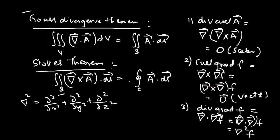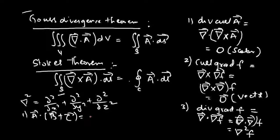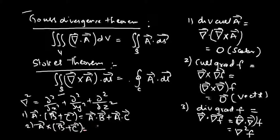These three identities are used many times in the electromagnetic wave chapter, in transmission lines, and in understanding wave propagation in waveguides and optical fibers. Additionally, the distributive property of vectors states: A-bar dot (B-bar + C-bar) = A dot B + A dot C, and A-bar cross (B-bar + C-bar) = A-bar cross B-bar + A-bar cross C-bar.